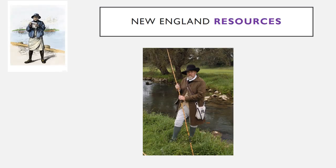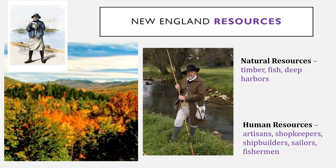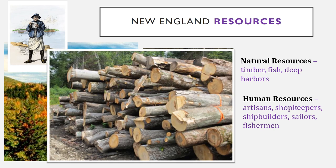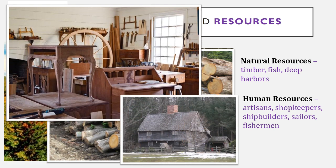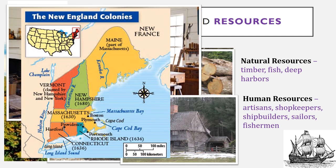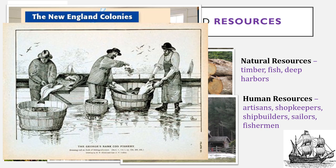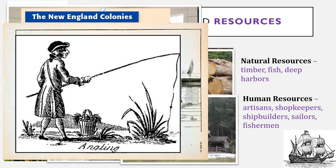The New England colonies all had similar natural and human resources during colonial times because their land, coastlines, and climates were similar. New England boasted many trees and forests, so cutting down timber to build furniture and houses or to ship across the ocean to England for a profit was a major natural resource. All of these colonies have a coastline along the Atlantic and many rivers plentiful with fish, making fish another major resource characteristic of New England. Take a moment to draw a fish or fishermen to capture this idea.